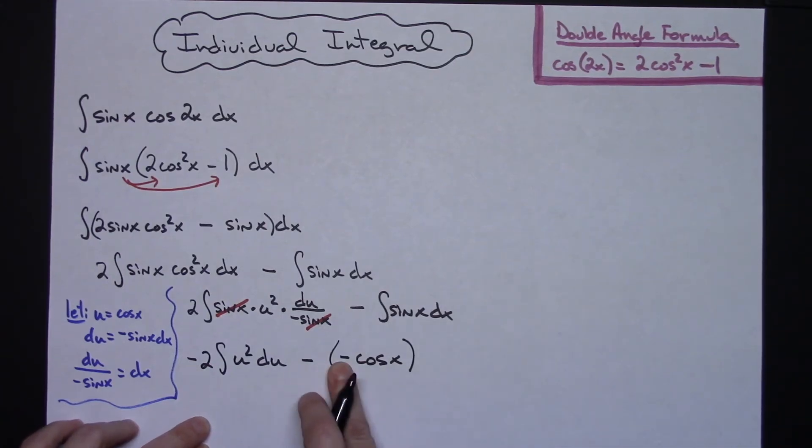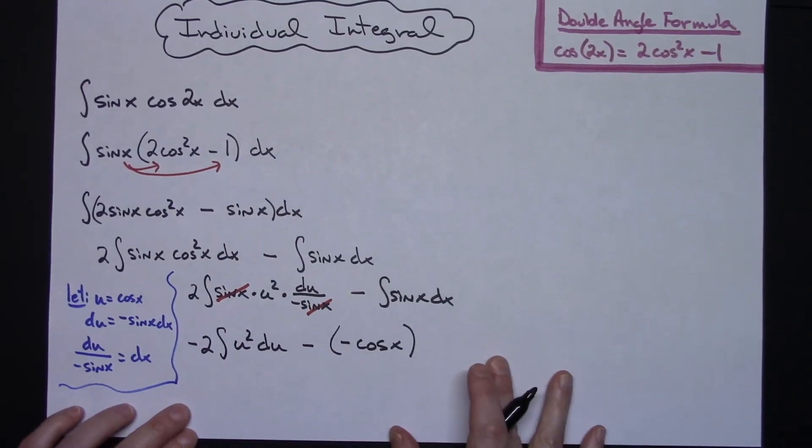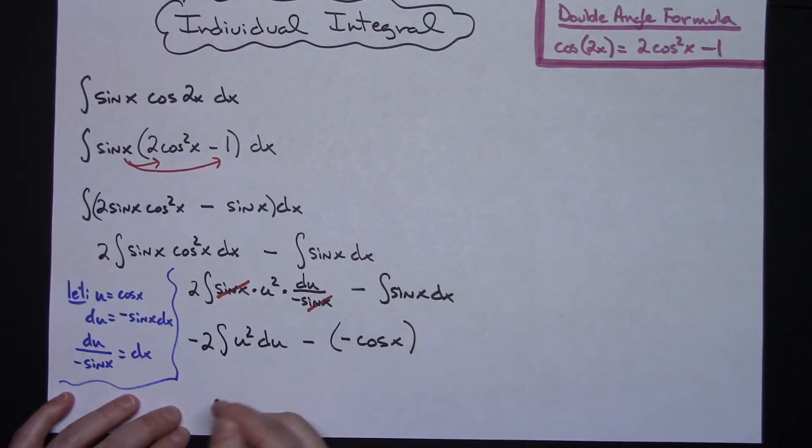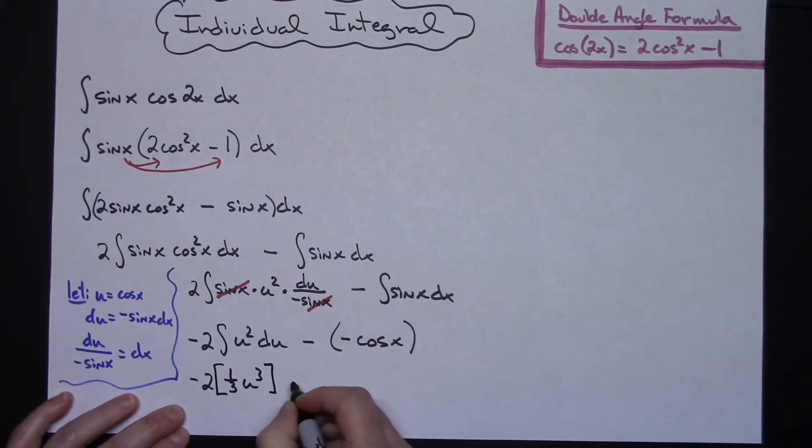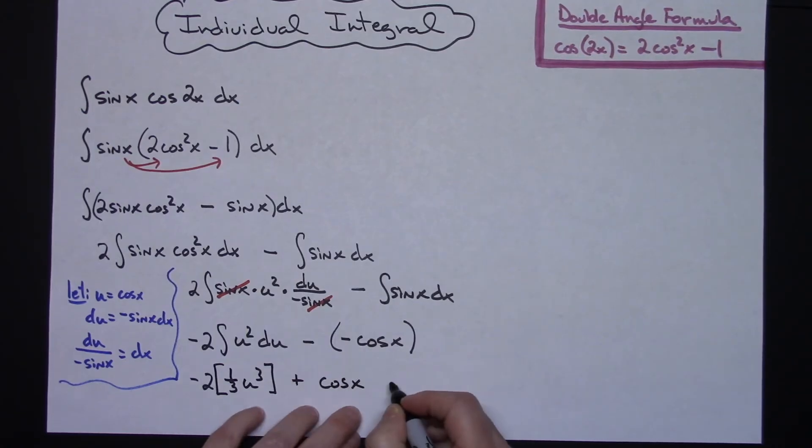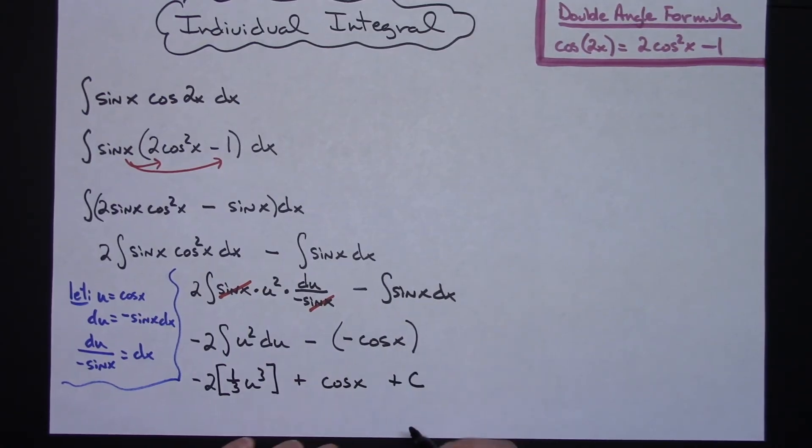So those two minuses allow me to do a plus right there. And then this is going to integrate really easily here. So I'll have minus 2 times, integrating this, add 1 to that exponent, I'll have a 3. So that'll give me 1/3 u to the 3rd right there. And then changing this to a plus, I'll have plus cosine x. And at this point I can add the plus c.